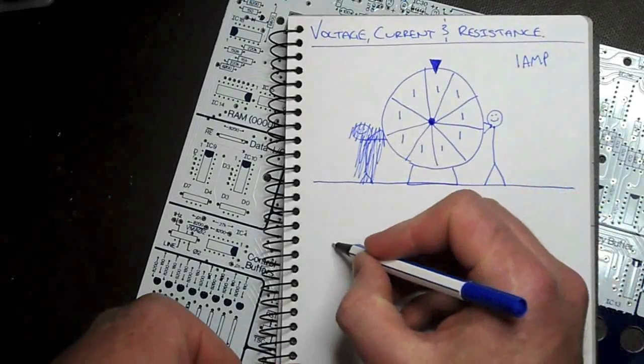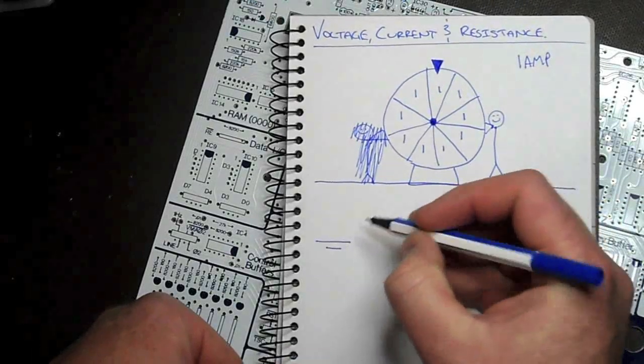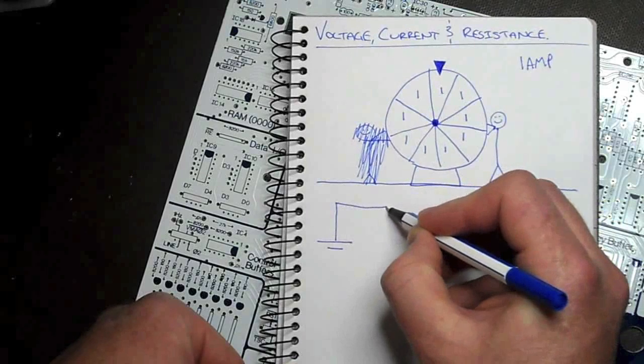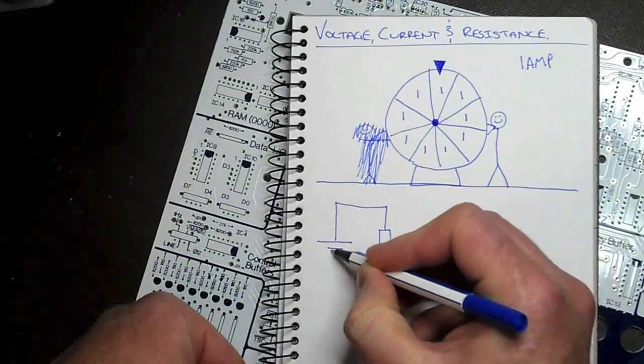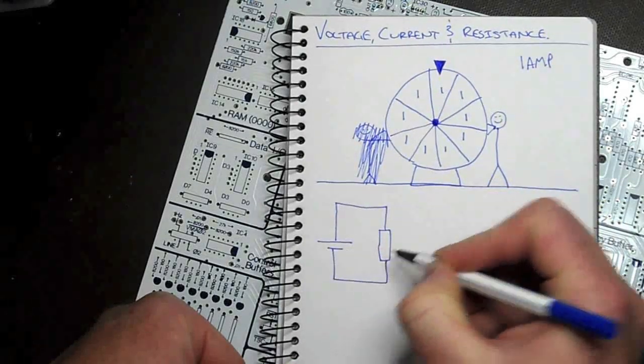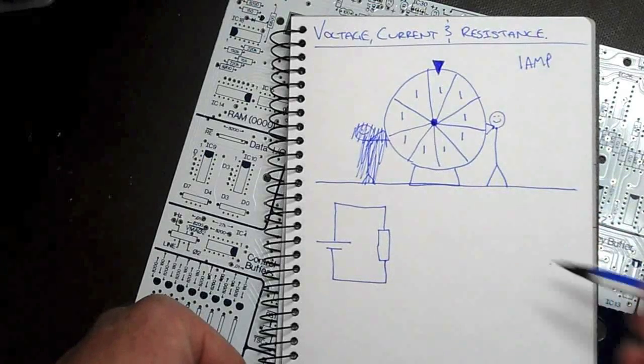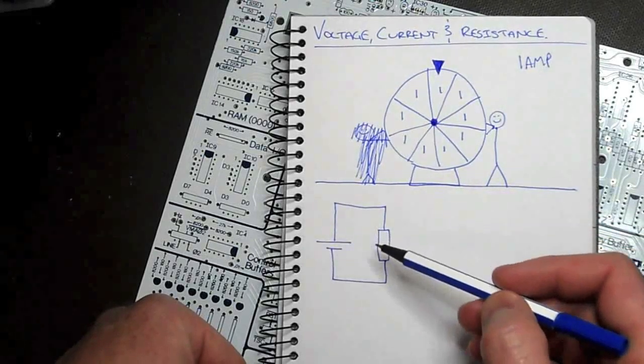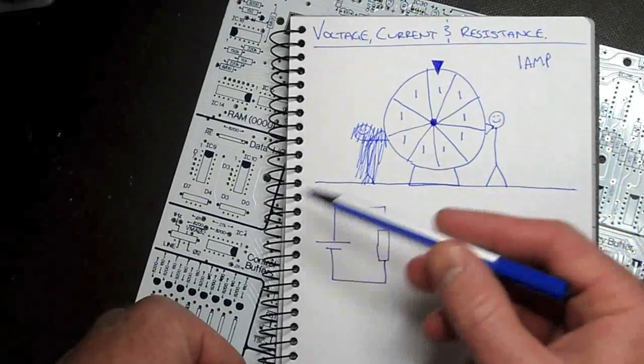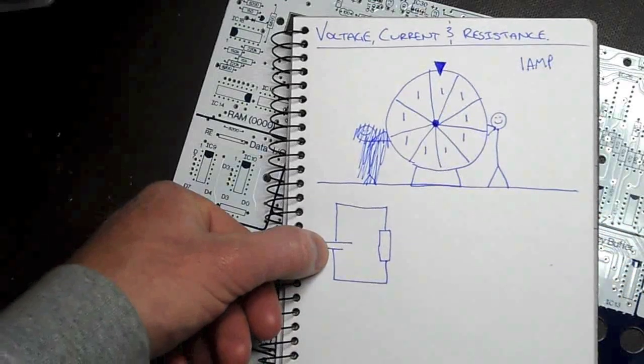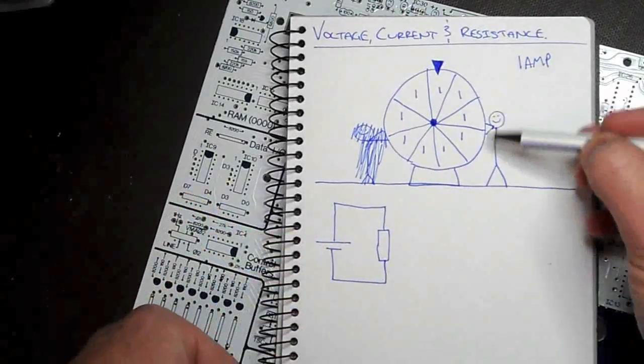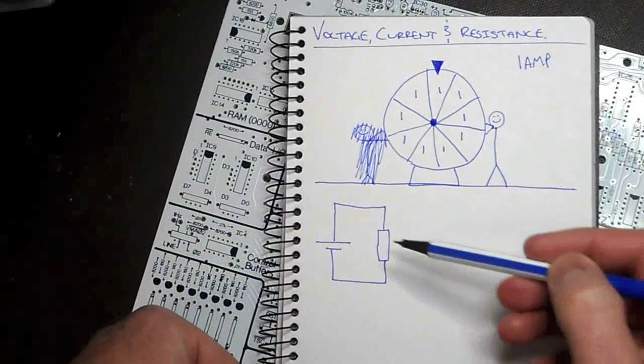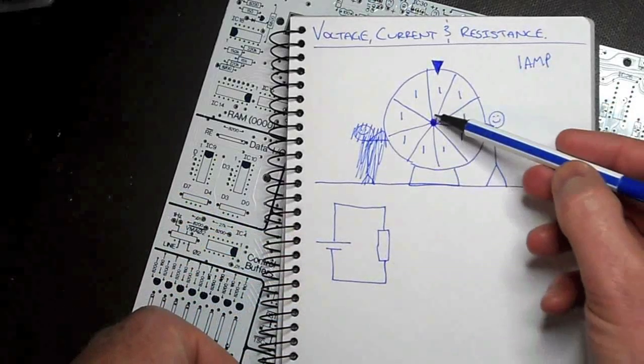So if we liken that to our circuit, here's our power supply, here's our resistor, or the resistance in the circuit. It's these two that determine how much current we get flowing. So the battery or the power supply is like you, that's the person. The resistance in the circuit is like the bearings.